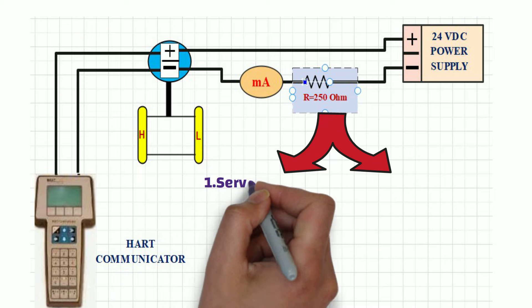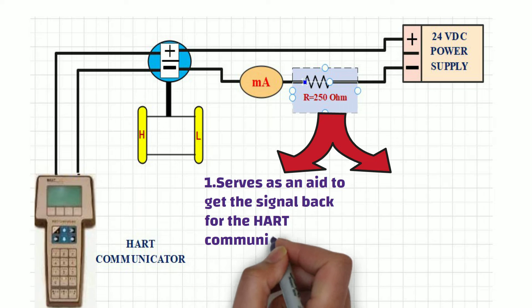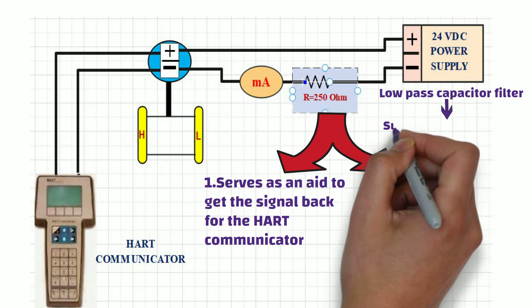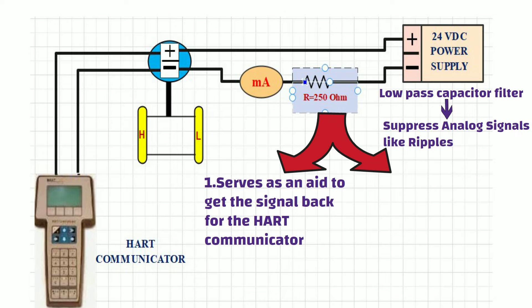Firstly, 250 ohm resistor serves as an aid to get the signal back for the HART communicator. As we know, DC power supply has low-pass capacitor filter which suppress analog signals like ripples. So, if there is no resistance between the power supply and transmitter, analog signal coming from the HART devices will be filtered out. And we won't be able to connect HART device to transmitter in this case.